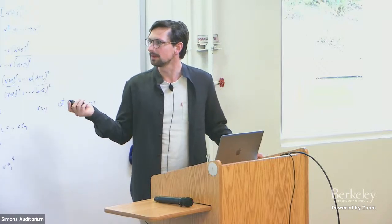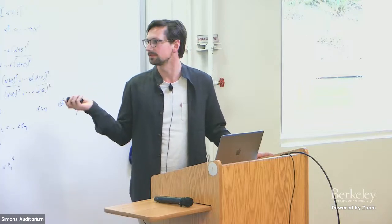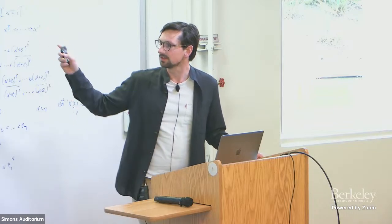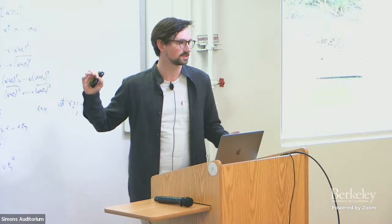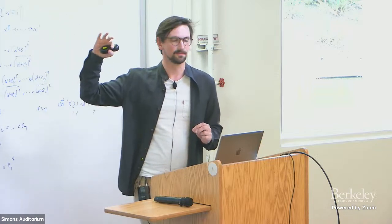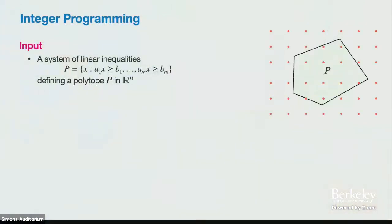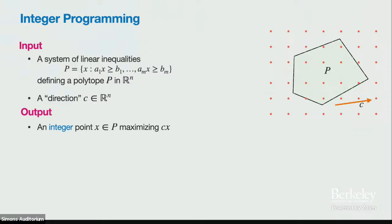In the integer programming problem, you're given as input a system of linear inequalities. These form a polytope in n-dimensional space — the intersection of all points satisfying the linear inequalities, giving you a convex object with flat sides. You're also given a direction you want to optimize in, and you want to output an integer point which maximizes in this direction.